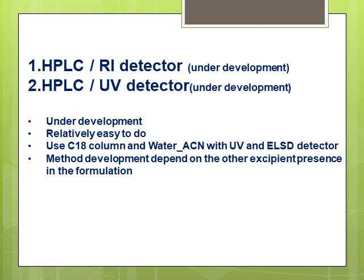For HPLC method development, I would say the task is relatively straightforward. I recommend using a C18 column with water and acetonitrile as mobile phase for both UV or ELSD. For RI, you will need an isocratic method and will need to optimize the conditions to get the right separation.